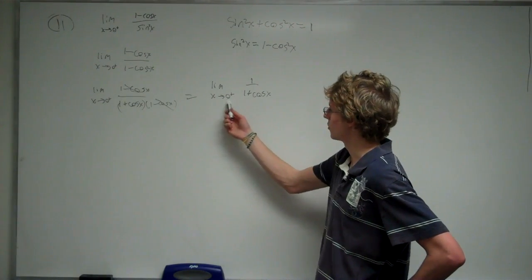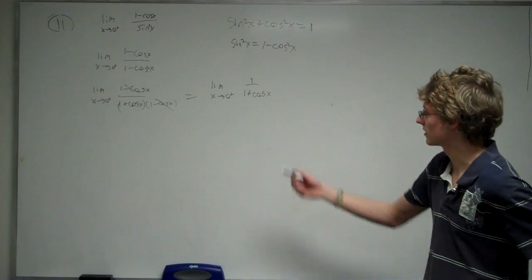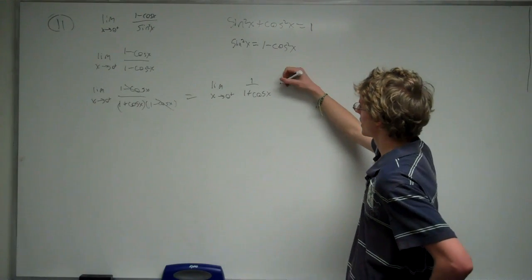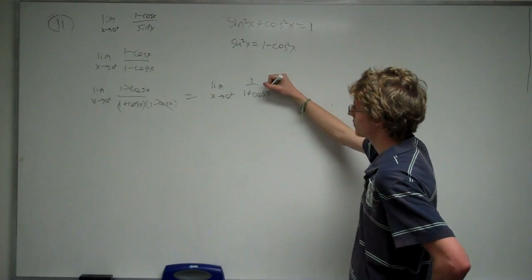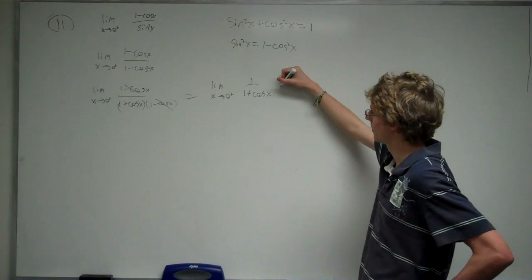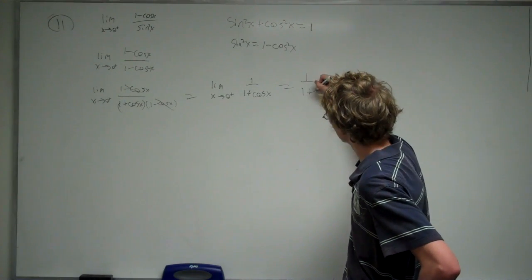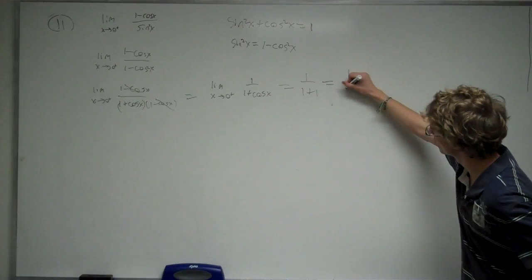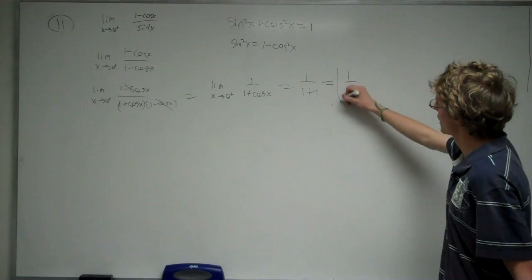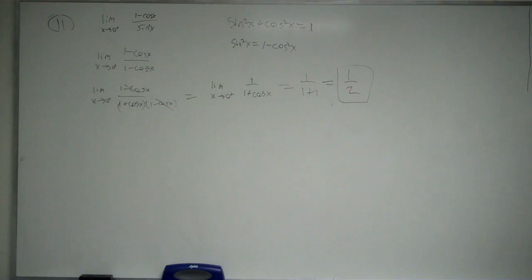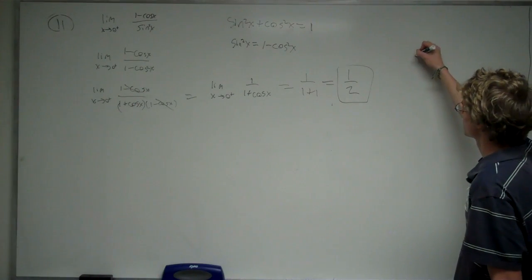Now, when we plug in 0 for x for this, it's not undefined. The cosine of 0 is 1, so we get 1 over 1 plus 1, which is the same as 1 over 2. So that's our answer, and that corresponds with answer choice C.